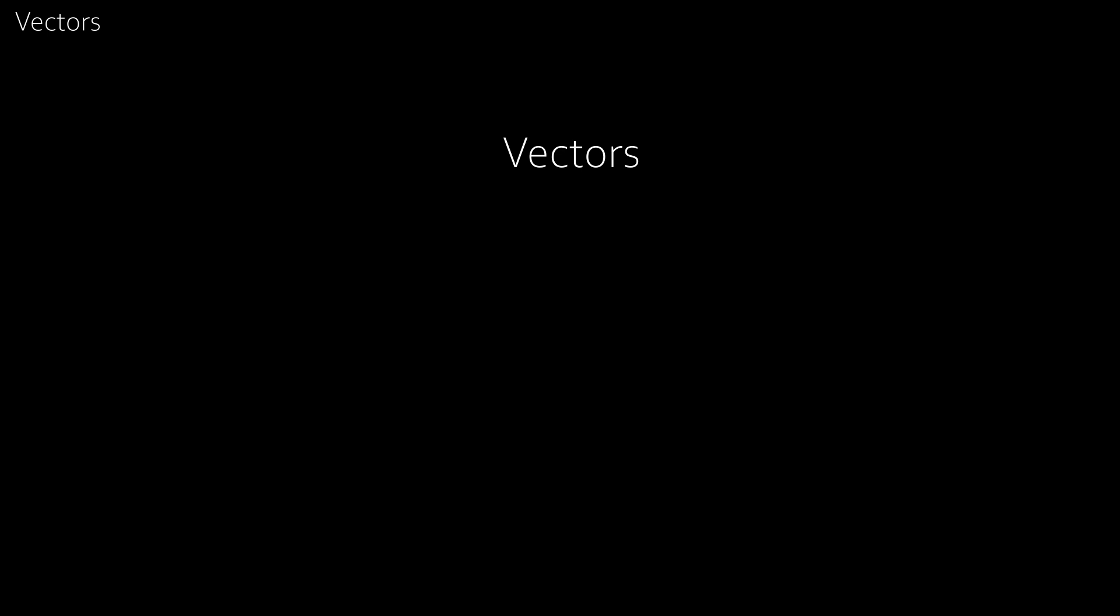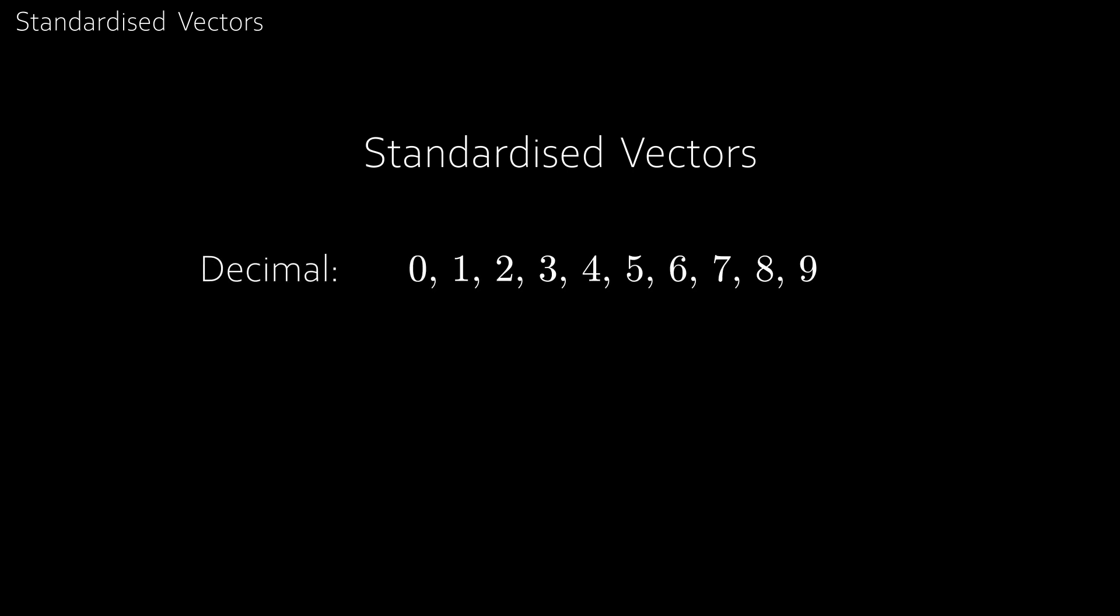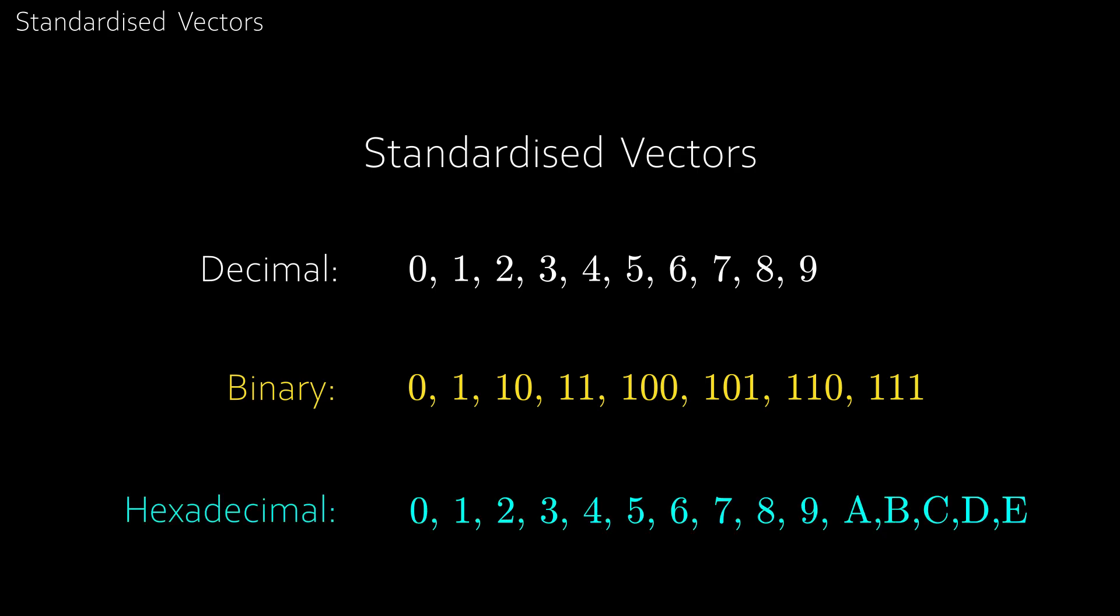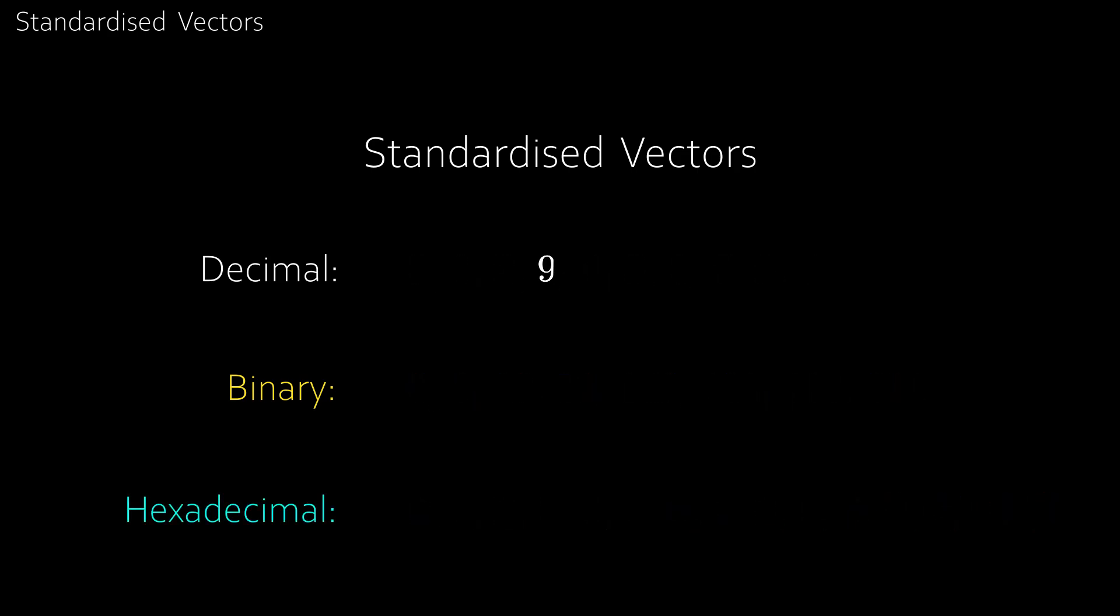But before we can even do that, we need to talk about standardised vectors. In the scalar world we deal with the decimal system, which is the standardised system. However, there are other systems, like binary and hexadecimal, and we can perform operations on all of these systems. However you can see that the non-standardised system doesn't really make much sense, as we're not used to 9 plus 7 equaling 10.